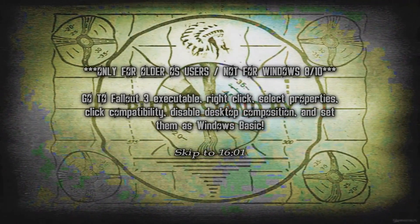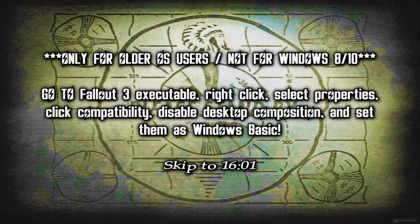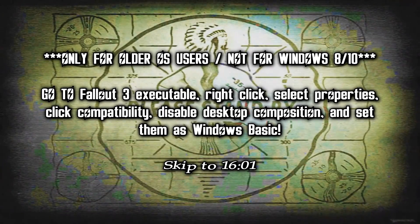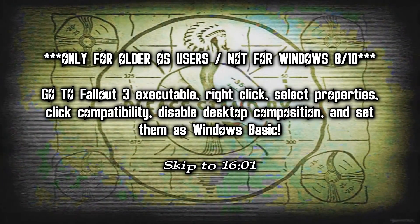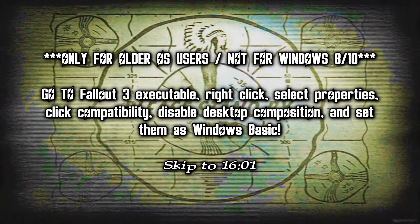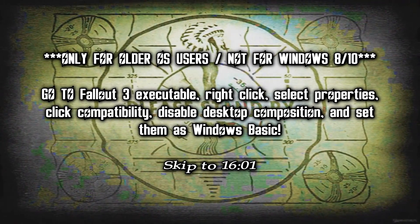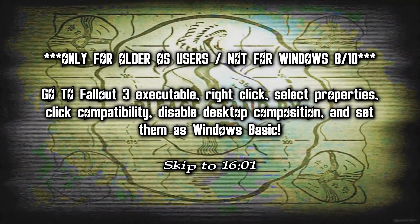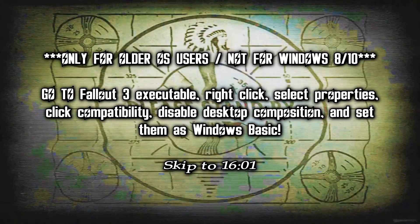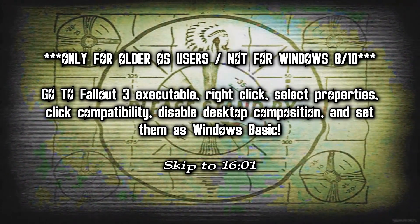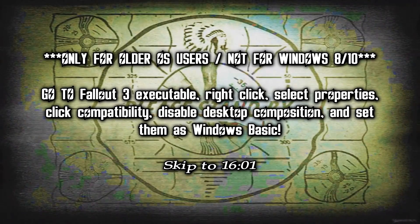This step is only for older operating systems — do NOT try this on Windows 8 or Windows 10. Go to your Fallout3.exe, right-click, select Properties, click the Compatibility tab, disable Desktop Composition, and set your theme to Windows Basic. Then try launching the game again through Mod Organizer to see if that fixed your problem.